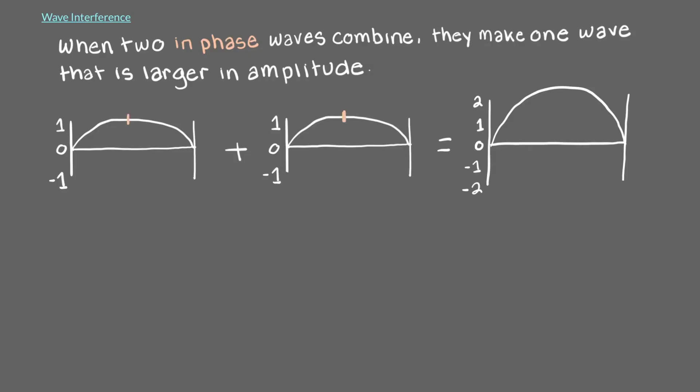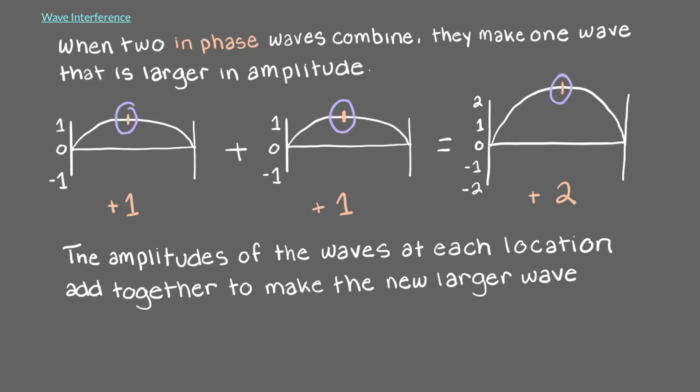If we look at this location on each wave, each of them has an amplitude of plus 1 at this point. We can add them. 1 plus 1 equals 2. The amplitudes of the waves at each location add together to make the new larger wave.